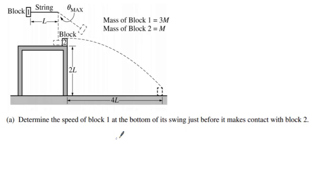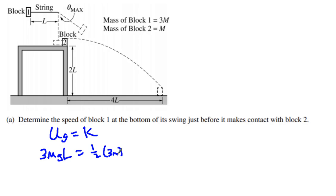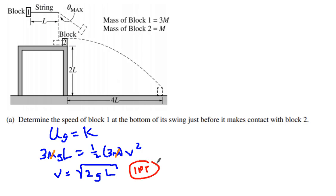This is a variable problem. We want to know the speed of block one at the bottom just before the swing makes contact. Using conservation of energy: gravitational potential energy equals kinetic energy. We have 3M × g × L = ½ × 3M × v². The masses cancel out, and the result is velocity equals the square root of 2GL. That is worth 1 point.